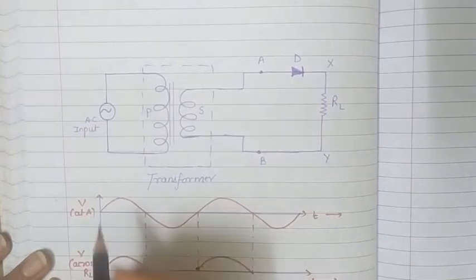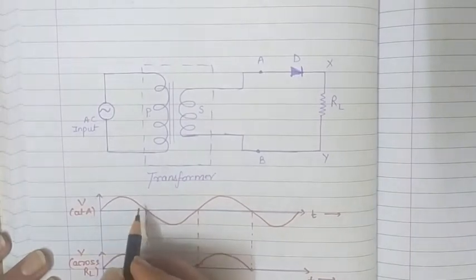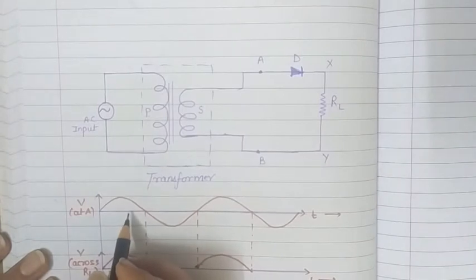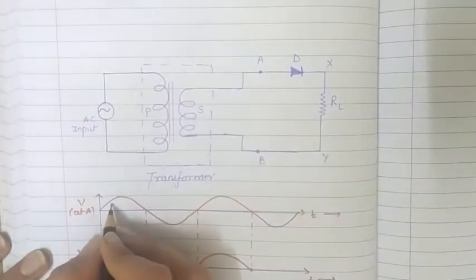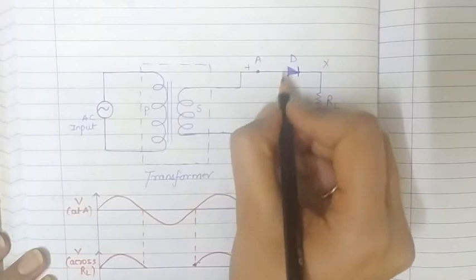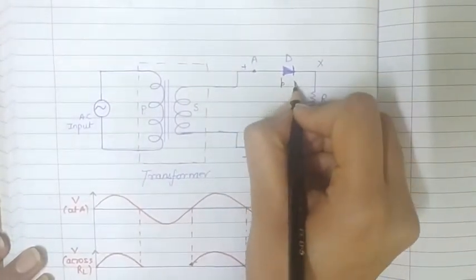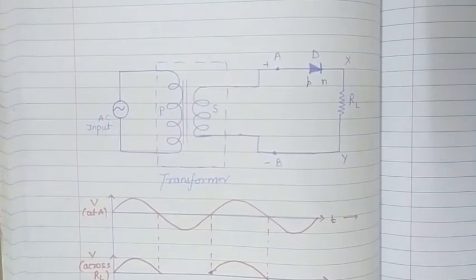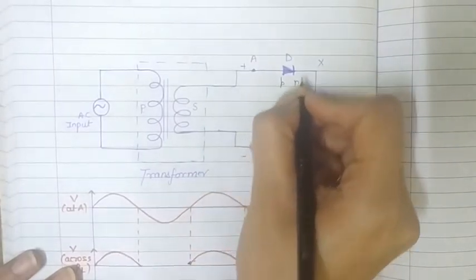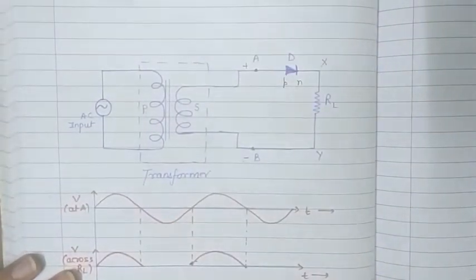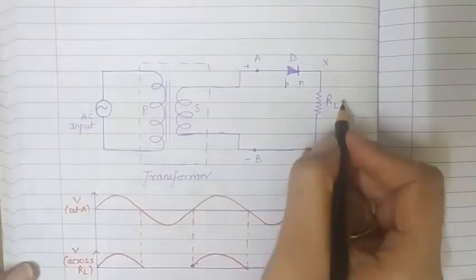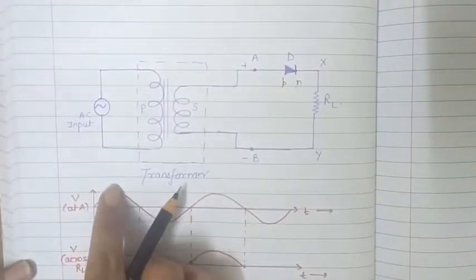Suppose first we have the positive half cycle of AC. At that time, end A is positive and end B is negative. Since A is positive and connected to the P side, and B is negative and connected to the N side, the diode during the positive half cycle is forward biased and will give us the output across RL.